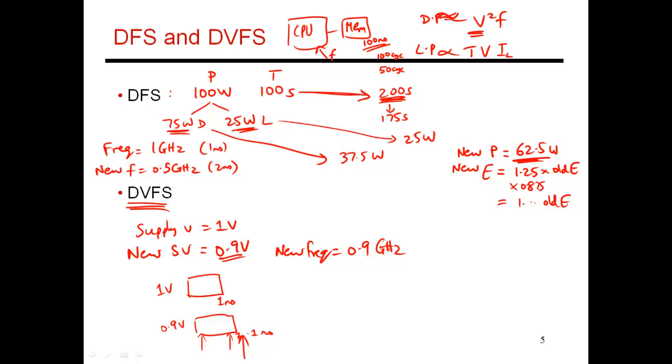Let's see how this impacts power consumption. We started out with 100 watts, which was 75 watts dynamic and 25 watts leakage. This 75 watts is a function of V square F. So the new dynamic power would be 75 times 0.9 times 0.9 squared. This is the V part and this is the F part. And this works out to something in the neighborhood of 56 watts, I believe.